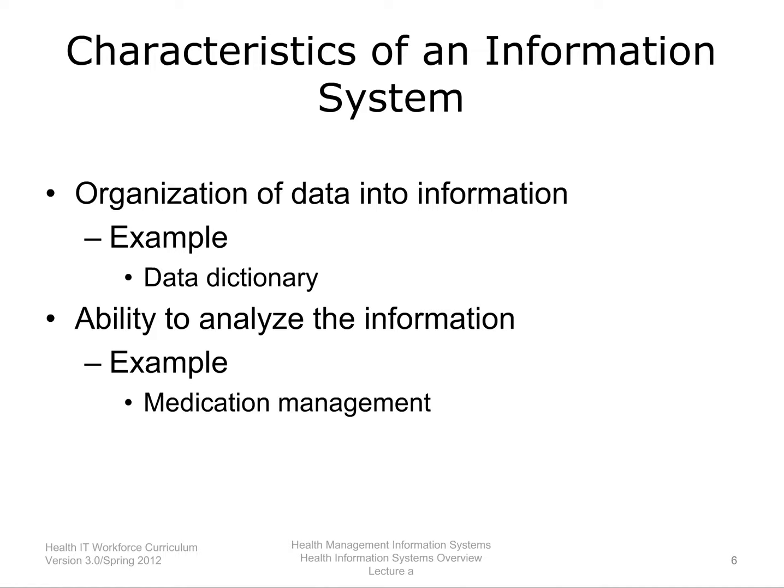Betts, 2007, described two characteristics of an information system as the organization of data into information and the ability to analyze the information. An example of how data may be organized is via a data dictionary. AHIMA, 2012, defines a data dictionary as a descriptive list of the names, definitions, and attributes of data elements to be collected in an information system or database, whose purpose is to standardize definitions and ensure consistent use. Being a central repository of information about stored data, it is used to help organize the data.